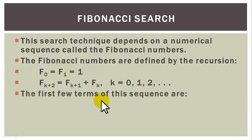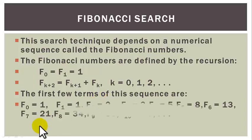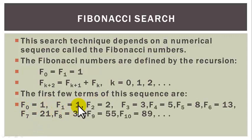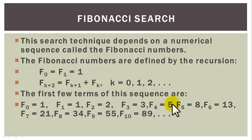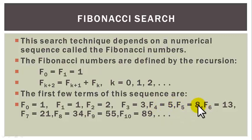The first few terms of this sequence are as follows. F0 is 1, F1 is 1. F2 is obtained from the recursion by putting k equals to 0, so F2 is equal to F1 plus F0, that is 1 plus 1 will give us 2. F3 is F1 plus F2 which is 1 plus 2 equals to 3. F4 is F2 plus F3 and that is 2 plus 3 which is 5. F5 is F3 plus F4 which is 3 plus 5 and that is 8. F6 is F4 plus F5 which is 5 plus 8 and that gives us 13.